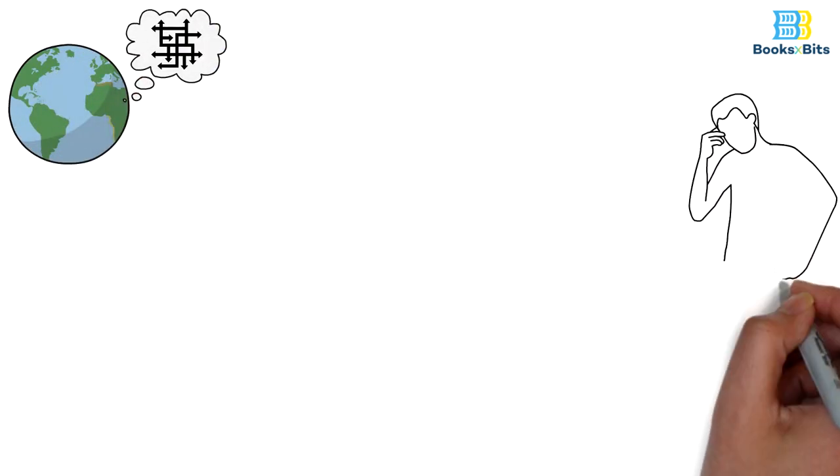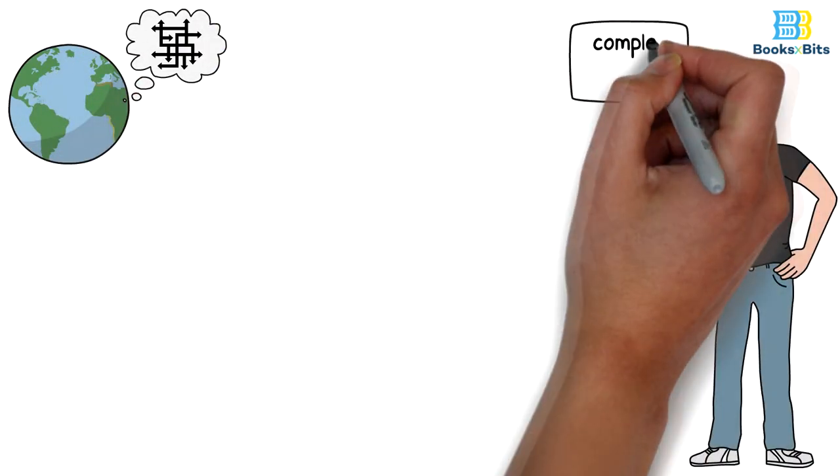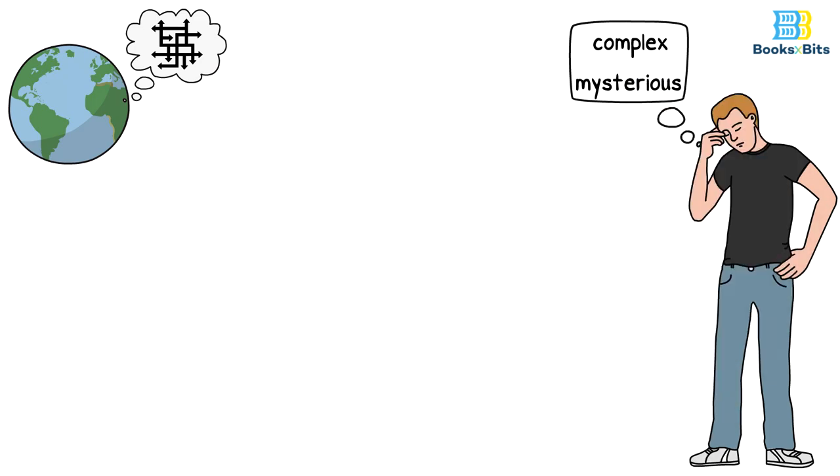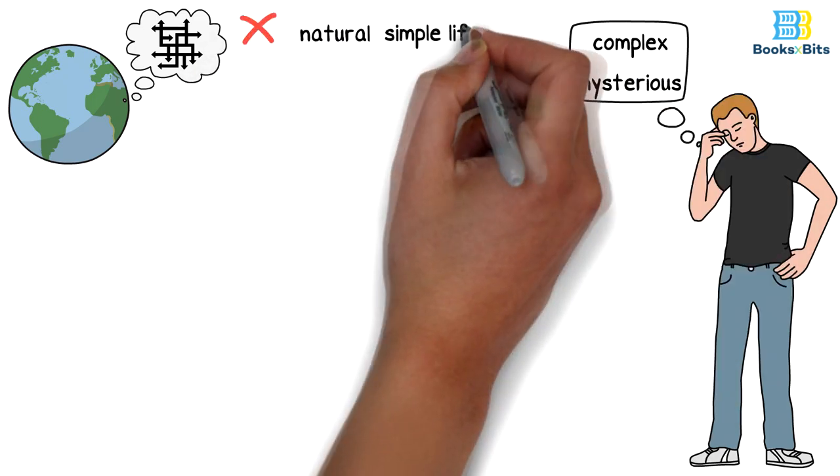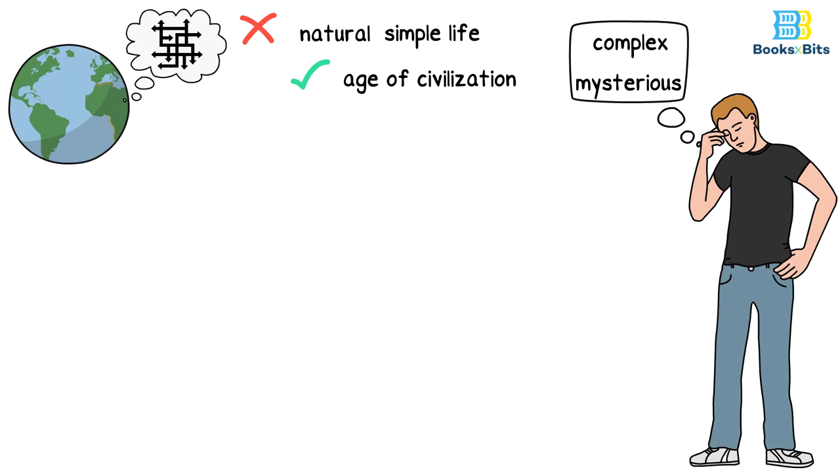We live in a complex world. That is why the human psyche is always complex and mysterious. Since man left the natural and simple life and entered the age of civilization, his life became a group of psychological problems.